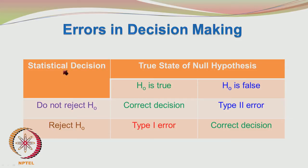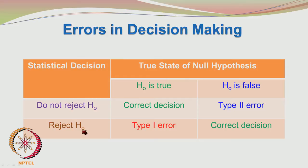When the statistical decision is reject H0 and H0 is true, meaning the person is innocent but you are sending them to jail, then you are committing a Type 1 error — this is a serious error. If H0 is false and you are rejecting H0, that is a correct decision; there ends the matter.